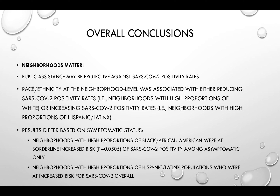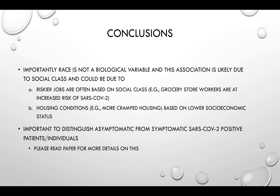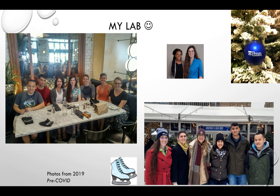Neighborhoods with high proportions of Hispanic or Latinx were at increased risk overall. Importantly, we want to underscore that race in this model is not considered a biological variable. This association is likely due to social class and could reflect riskier jobs — for example, grocery store workers — as well as more cramped housing conditions, as shown in the neighborhood images earlier. Socioeconomic status correlates heavily with race and ethnicity, and we believe there are uncaptured elements manifesting as race and ethnicity associations that require further investigation. We also underscore the importance of distinguishing asymptomatic from symptomatic SARS-CoV-2 positive individuals. Please read our paper for more details, and I would like to thank my lab as well.